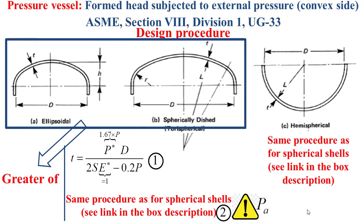For the hemispherical formed head, the thickness is sized using the same procedure as for spherical shells, and as I mentioned, you can see the link in the description box.